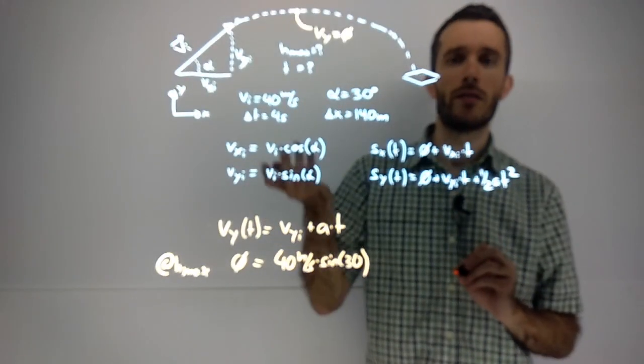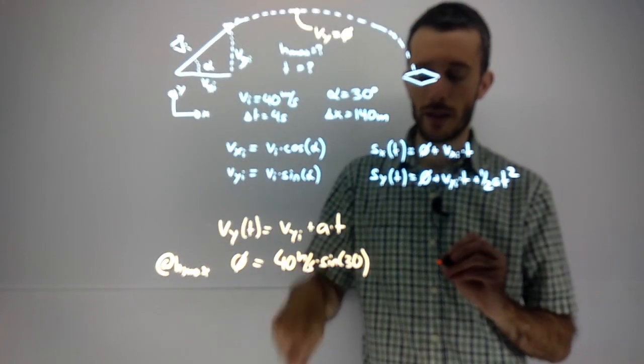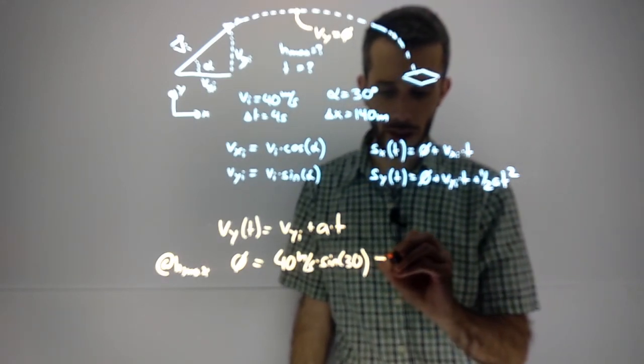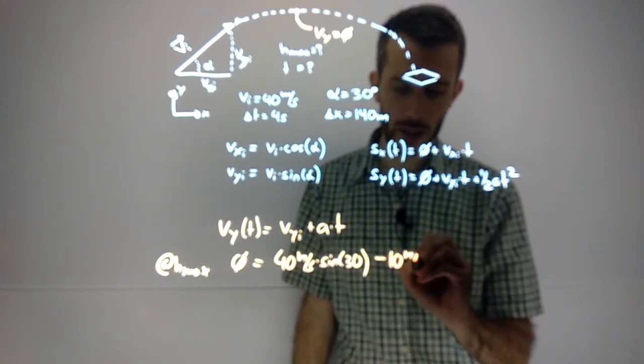For the acceleration, assuming that we are on Earth, it's minus 9.8 meters per second squared. Let's be a bit lazy and go with minus 10 meters per second squared.